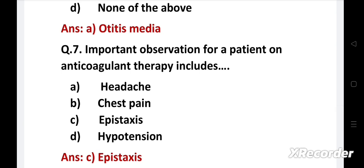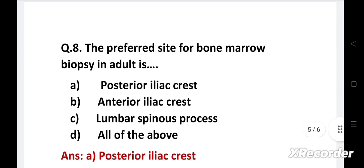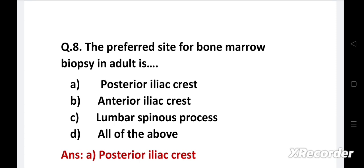Next question: The preferred site for bone marrow biopsy in adult is: Option A - Posterior iliac crest, B - Anterior iliac crest, C - Lumbar spinous process, D - All of the above. Right answer is Option A - Posterior iliac crest. It is the commonly used and preferred site for bone marrow aspiration in adults.